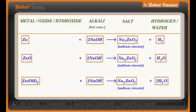Sodium zincate has the formula Na2ZnO2. You know how to balance this equation. Now taking the hydroxide of the same metal — Zn(OH)2 treated with NaOH — will give you sodium zincate Na2ZnO2, but this time it will not give hydrogen gas; it will give water H2O. You know how to balance this equation similarly to what we have been doing.